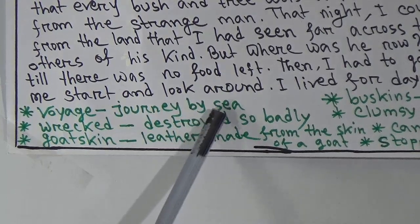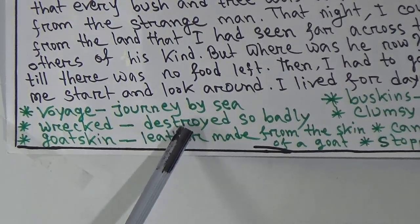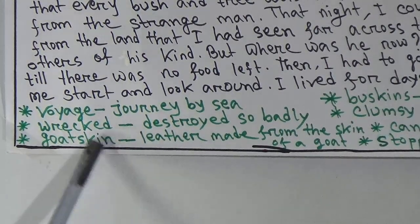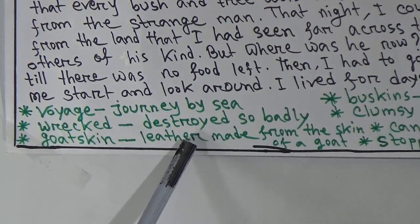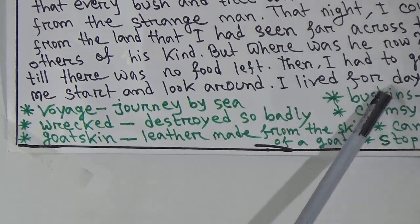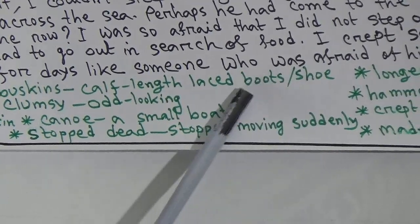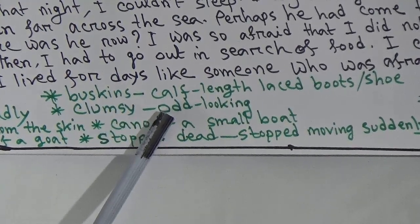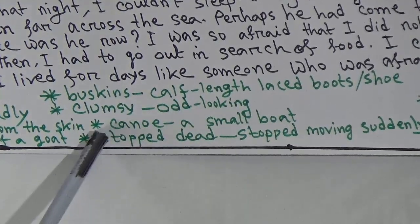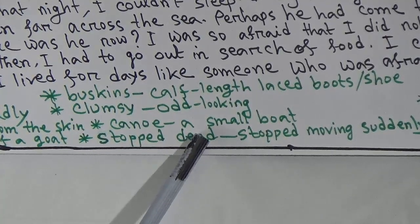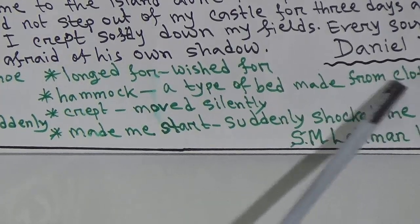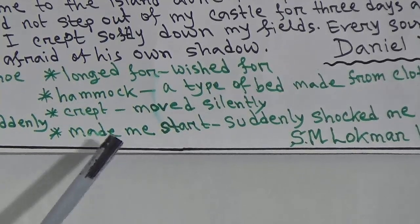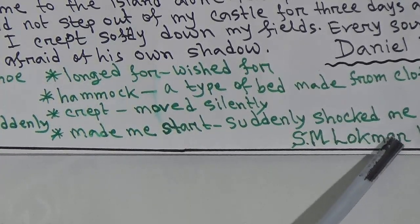'Wreck' means destroyed so badly. 'Goatskin' — goatskin is a type of leather made from the skin of a goat. 'Buskins' means calf-length laced boots — one type of boot. 'Clumsy' means which is not well fitted, which looks odd. 'Canoe' means a small boat. 'Stop dead' means stopped moving suddenly. 'Longed for' means wished for. 'Hammock' is a type of bed made from cloth. 'Craft' means moved silently. 'Made me start' means suddenly shocked me.